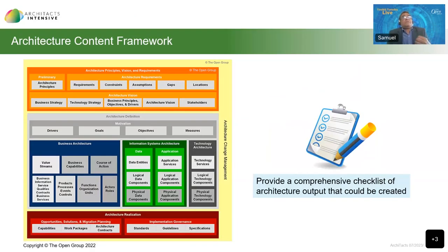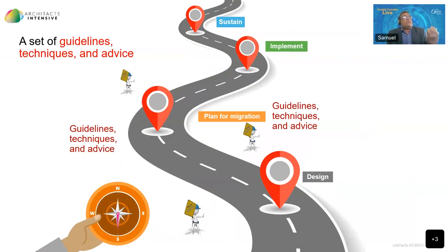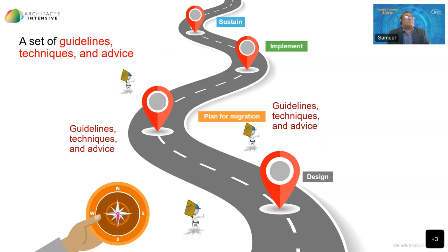Going hand-in-hand with the ADM is the TOGAF content framework. It gives you a definition and description of the building blocks that could be there in any enterprise. It also gives you a checklist of architectural output that could be created. Then you have a bunch of guidelines, techniques, and advice that are really useful for practitioners as they traverse this journey — designing the architecture, planning for migration, implementing the architecture, and sustaining the enterprise architecture.